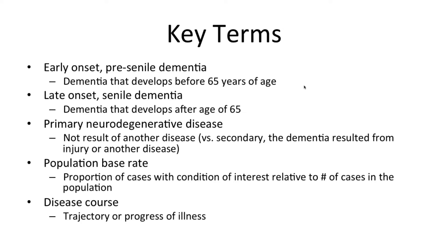Presenile dementias are those that commonly develop before the age of 65. Although not covered in depth in this presentation, there is some research to suggest that genetic abnormalities appear to be important in some types of presenile dementias. Other senile dementias are more tightly linked to advancing age. Primary neurodegenerative disease is a term often seen in the literature, which is unique in that it's primarily related to the symptoms, as opposed to some secondary impact, like a brain infection or multiple sclerosis.